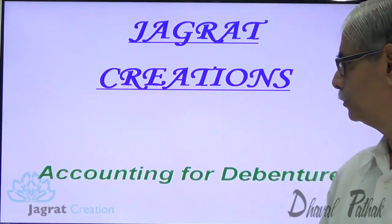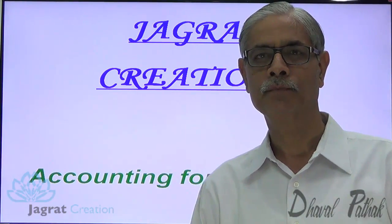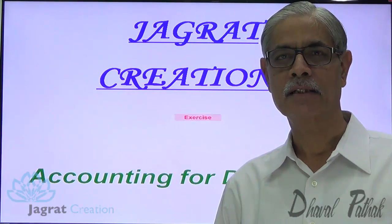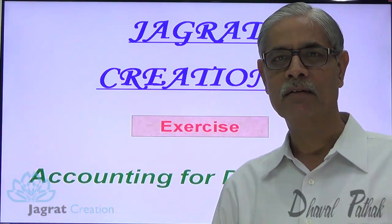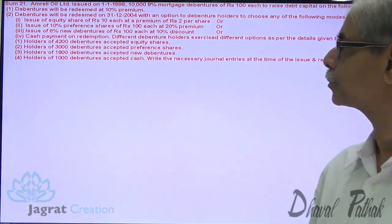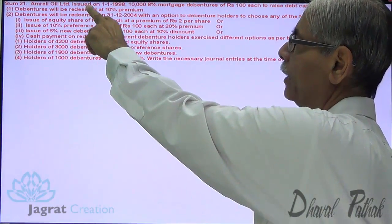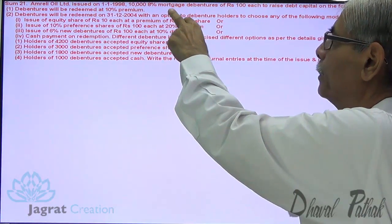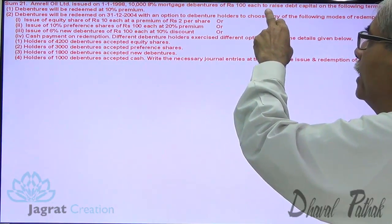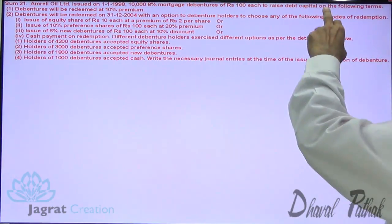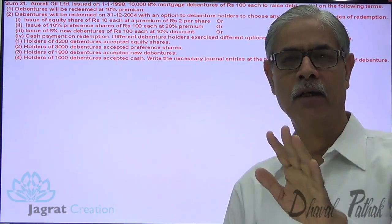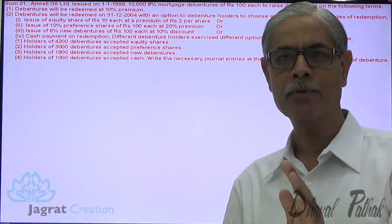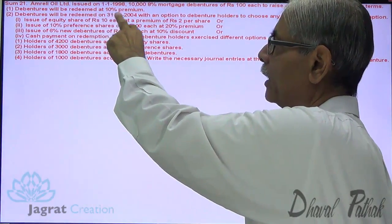Today I wish to consider one sum from a chapter of Accounting for Debentures. The sum is from an exercise. Observe the sum on the screen. Umbrella Oils Limited issued on 1-1-1998, 10,000 8% mortgage debentures of Rs. 100 each to raise debt capital on the following terms. You are given the terms for issue and redemption of debentures. Debentures will be redeemed at 10% premium.